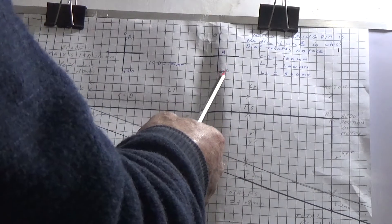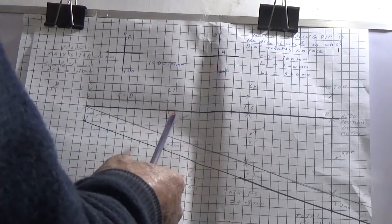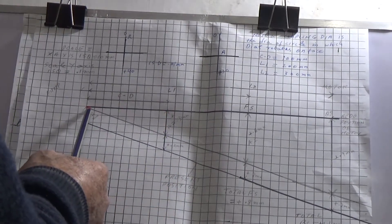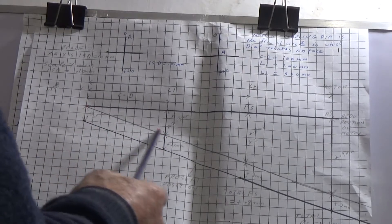So your angular reading is plus 30, so you will take three scales. One, two, three. These are three scales. And you join these two points and you extend this line.